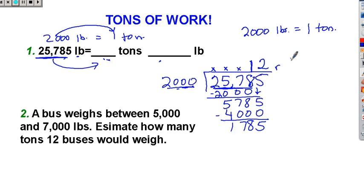Now, what am I going to do with that remainder? 1,785. That's how many pounds are left over after I put these pounds into tons. So the answer would be 12 tons, 1,785 pounds. That's how you do that first problem.